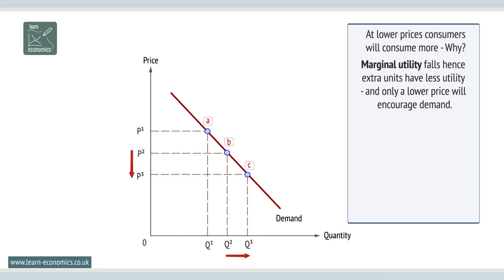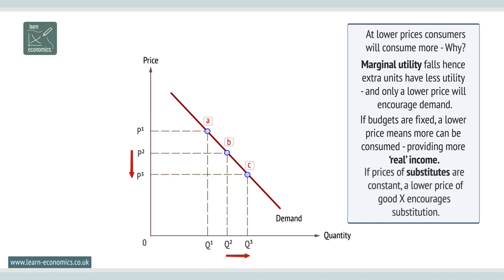Demand can also be explained in two other ways. If budgets are fixed, a lower price means more can be consumed, providing more real income. If prices of substitutes are constant, a lower price of good X encourages substitution. The two effects are called the income effect and substitution effect.